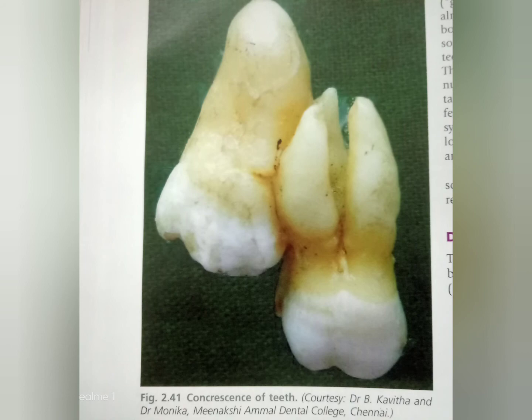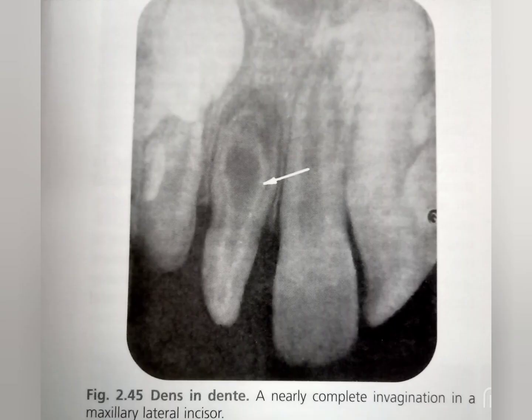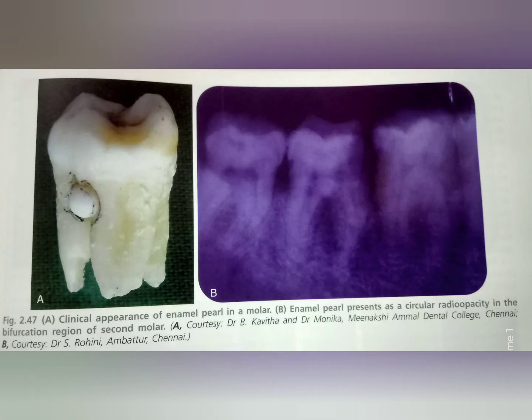Concrescence of teeth, fused in the symphysis region. This is talon cusp, an antridate tooth. This is dens invaginata. Occlusal view of maxillary premolar with dens evaginatus. Clinical appearance of enamel pearl in a molar.